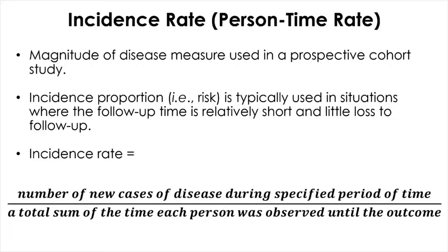However, the calculation of the denominator can be a bit complicated, which is defined as a total sum of the time each person was observed without disease until one of the four endpoints. For example, a person followed up for 10 years without developing disease in a 10-year longitudinal study contributed 10 person-years of observation. So that is the unit of the incidence rate: person-years, person-months, or even person-hours, depending upon the length of the study.